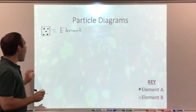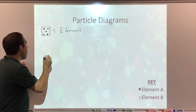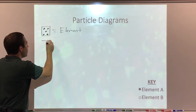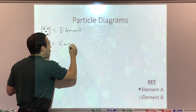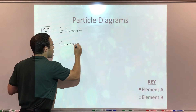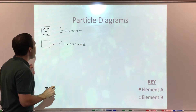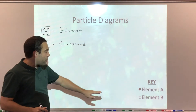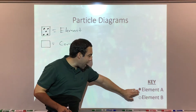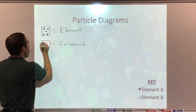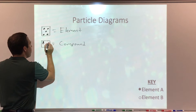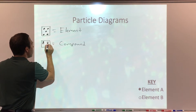To draw a compound — remember, a compound is two or more different elements chemically combined in fixed proportion — I need two different elements. I need both element A and element B, and I'm going to draw them together. So one shaded, one open circle. I can flip that: one open, one shaded circle.